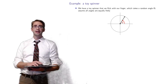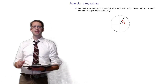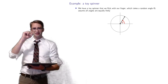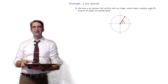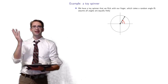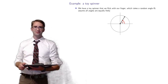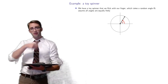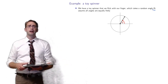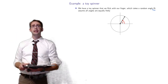The next example has an infinite number of outcomes — like a toy spinner with a little arrow on an axle. You flick the spinner, it spins, and it takes a random angle theta. We assume all angles are equally likely, so it's equally likely to point in any direction. The sample space is the interval zero to two pi.